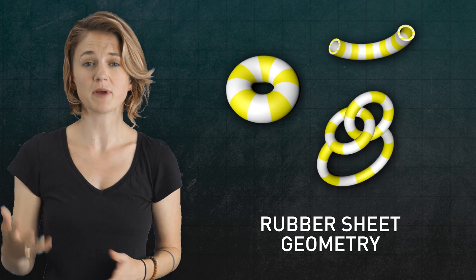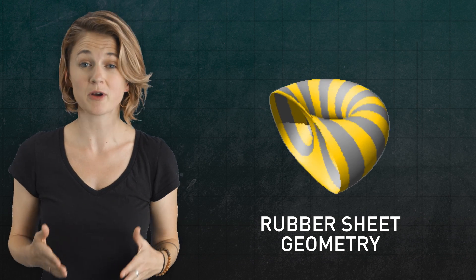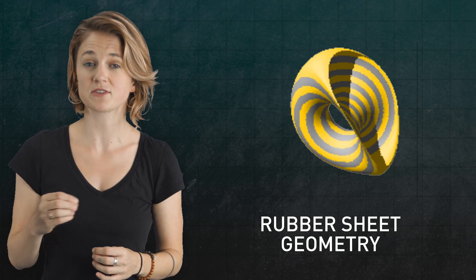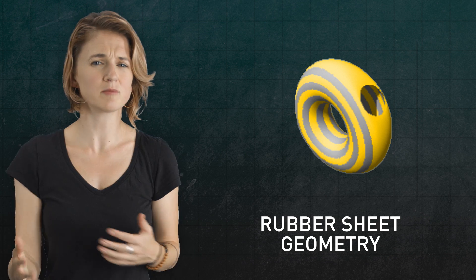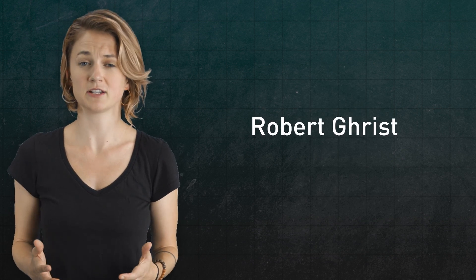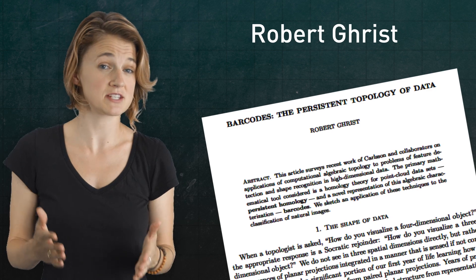The topologist is free to bend and stretch shapes without puncturing it or contracting any holes. They study the properties of shapes that are preserved by this flexible motion, such as how many holes of each dimension a shape has. As Robert Grist put it in his article, Barcodes the Persistent Topology of Data,